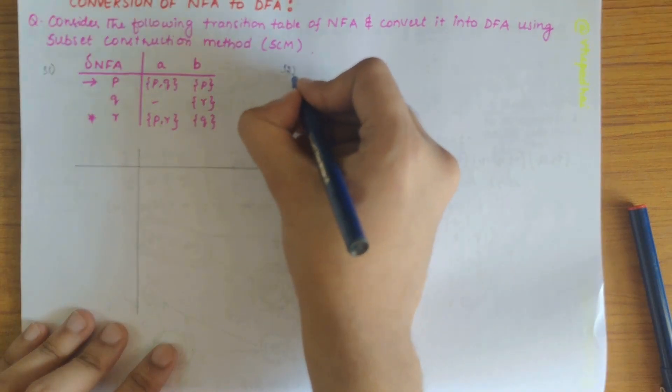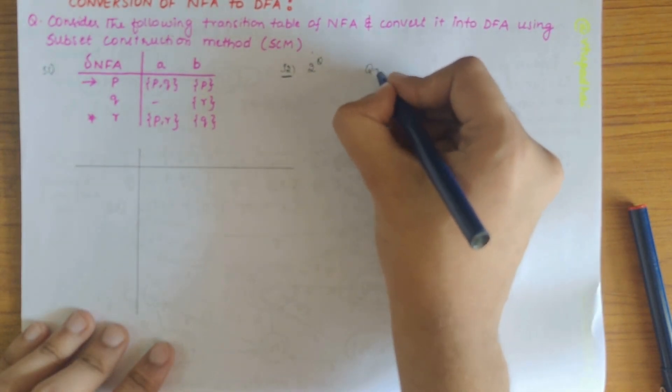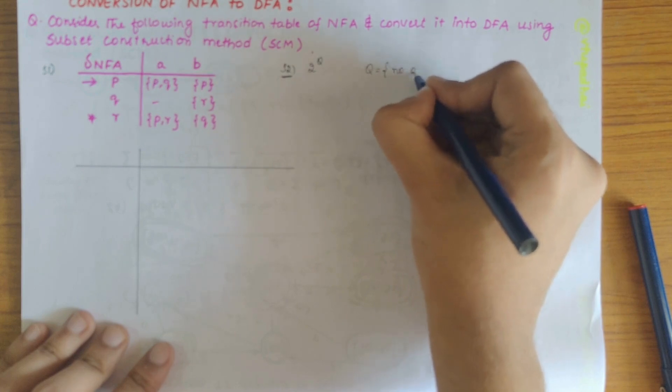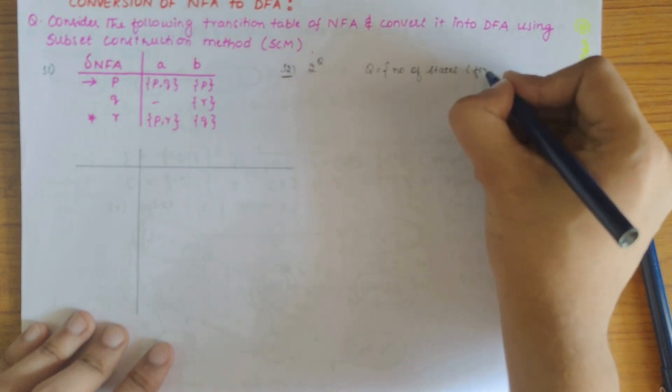Our first step was to construct the transition table which they have given in the question itself. Our next step would be to find out the total states that is 2 power q states. So here q refers to the number of states, finite number of states.